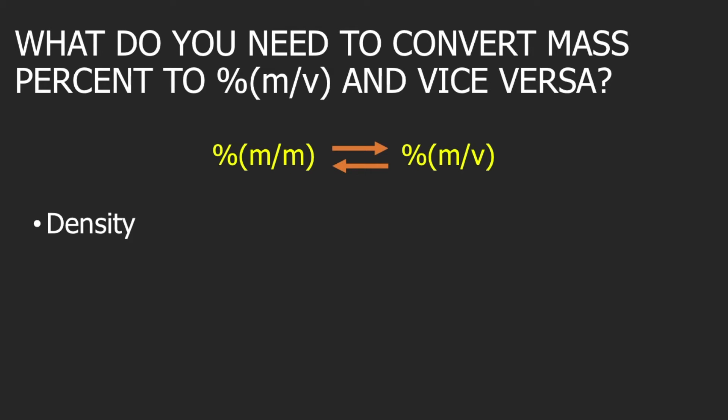Now, when the problem is asking you to convert mass percent to percent mass per volume, or the other way around, the problem must provide the density of the solution. If the density of the solution is not given in the problem, or there's no way for you to find out the density, then you cannot do the conversion. Please take note of this — you need to look for the density when you are given this type of problem.